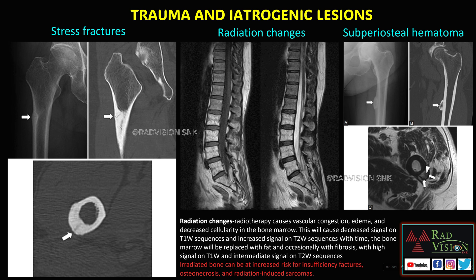There are also trauma and iatrogenic causes. A stress fracture with exuberant callus formation can sometimes mimic tumors. Early radiation changes cause vascular congestion, edema, and decreased cellularity — causing low signal on T1 and high signal on T2. Chronic radiation changes show significant fatty marrow replacement, making bones hyperintense on T1 and intermediate to hyperintense on T2 — chronic radiation-induced fatty marrow replacement. Subperiosteal hematoma can also mimic osteoid osteoma or osteochondroma-like lesions.